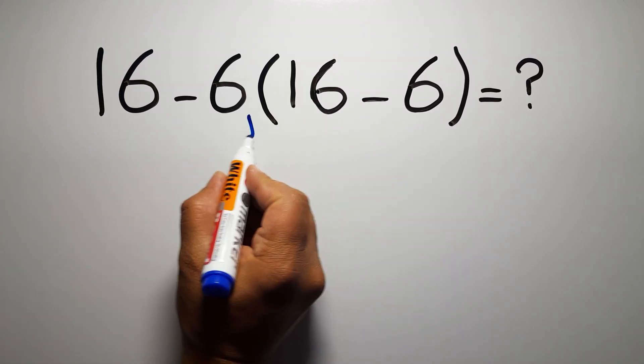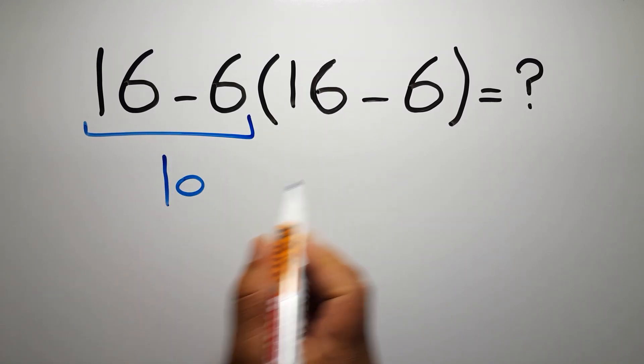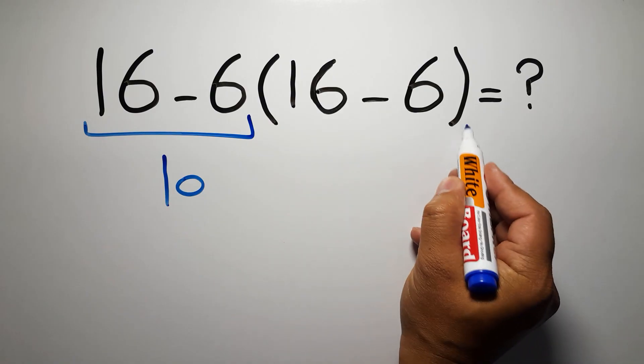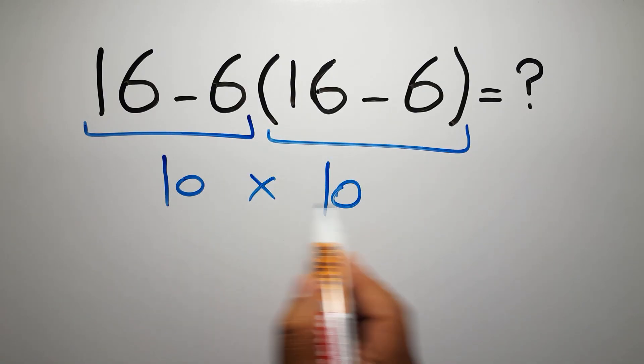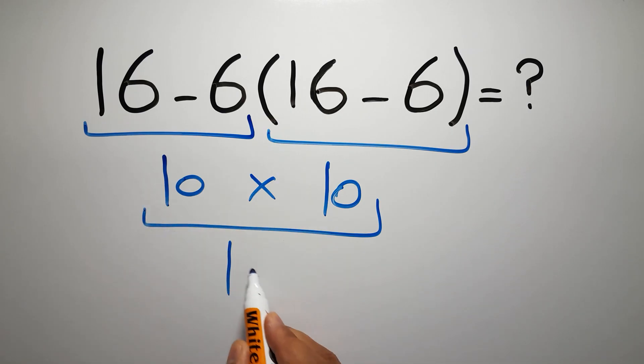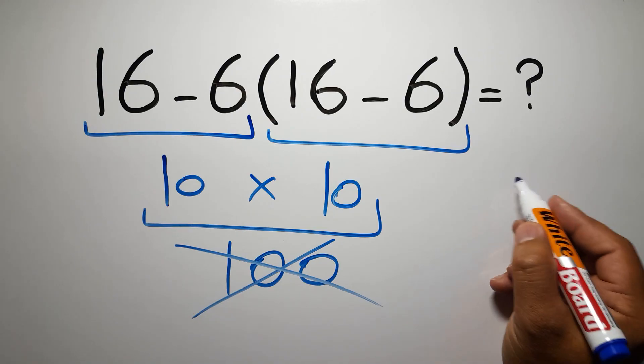16 minus 6 gives us 10, and again here we have 16 minus 6, so 10 times 10 is just 100. But this answer is not correct because according to the order of operations, first we have to do parentheses.